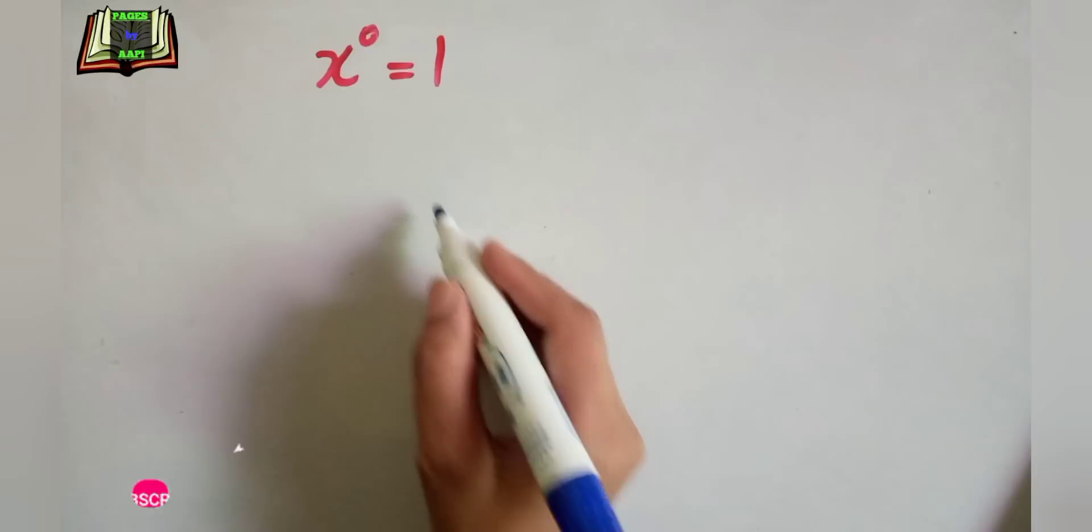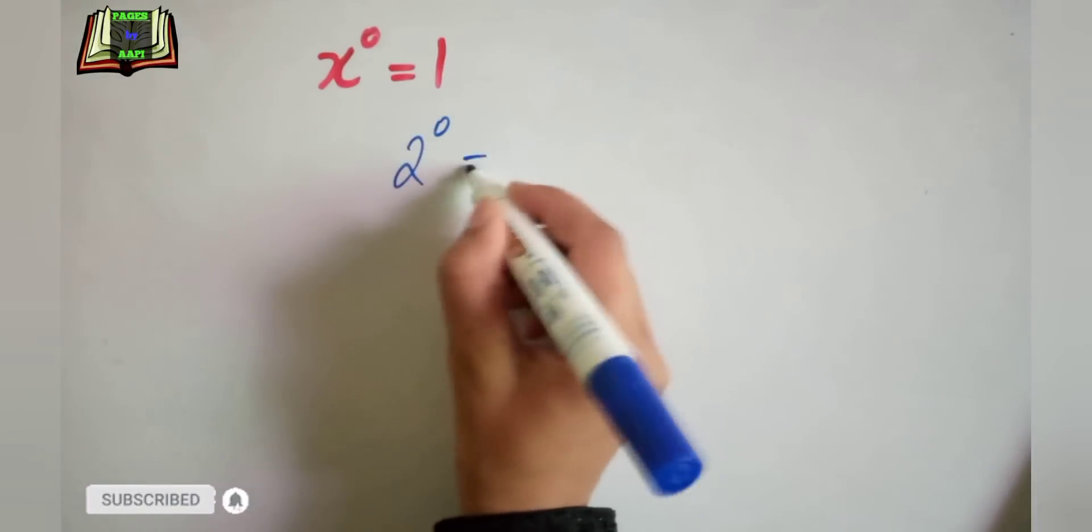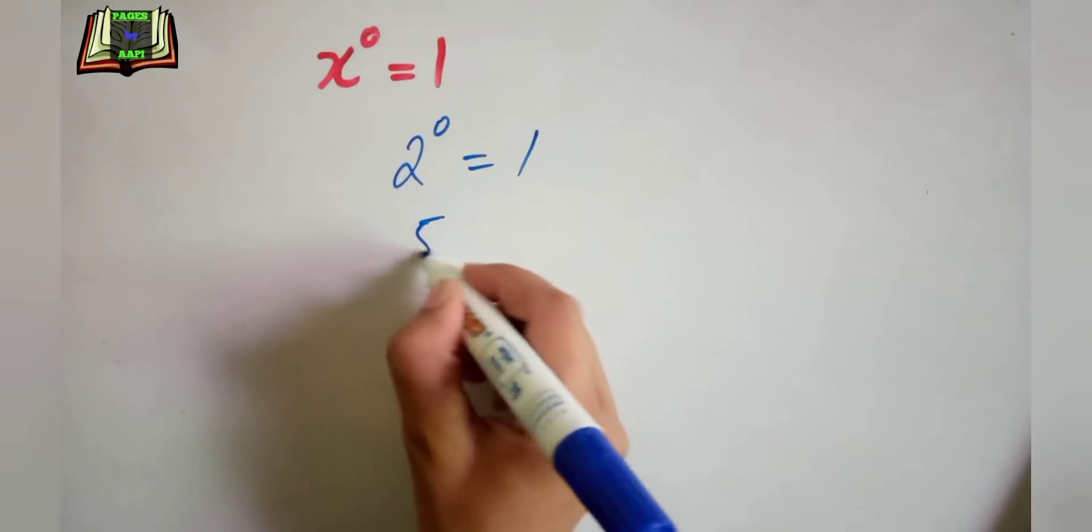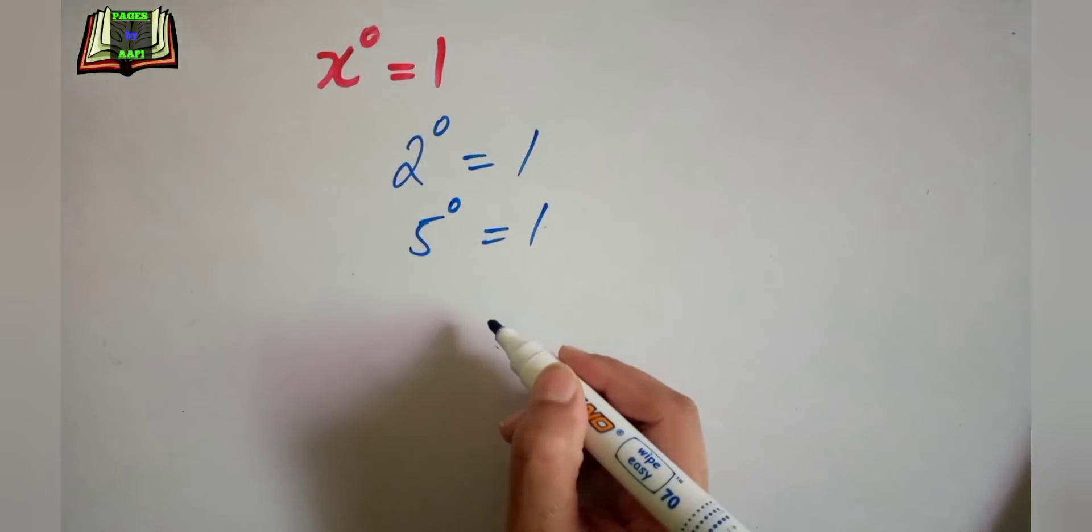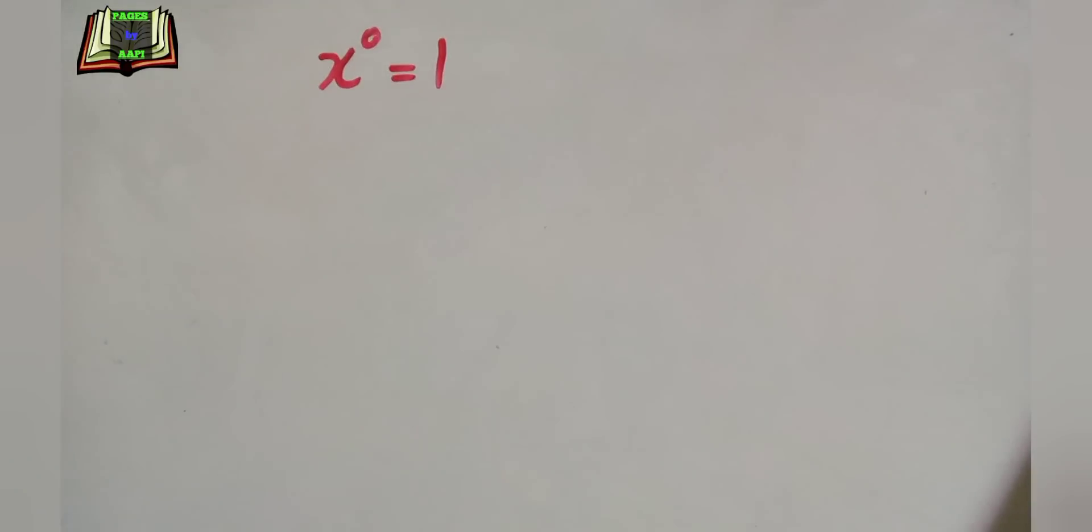For example, 2 ki power 0, also equal to 1. 5 ki power 0, also equal to 1. But how? Aaj ki video mein hum isko logically jaanenge. The first thing we should know is the rule of exponent.